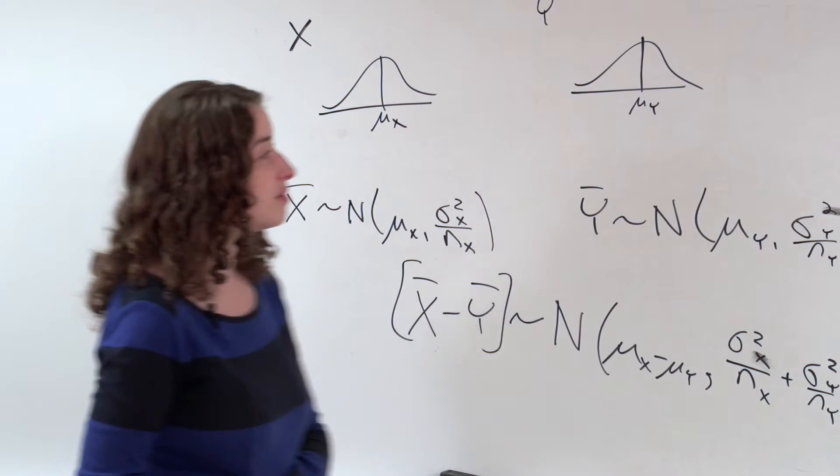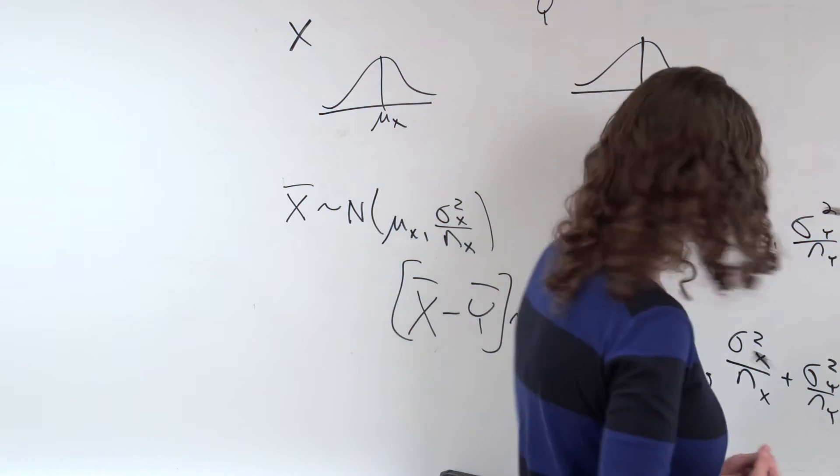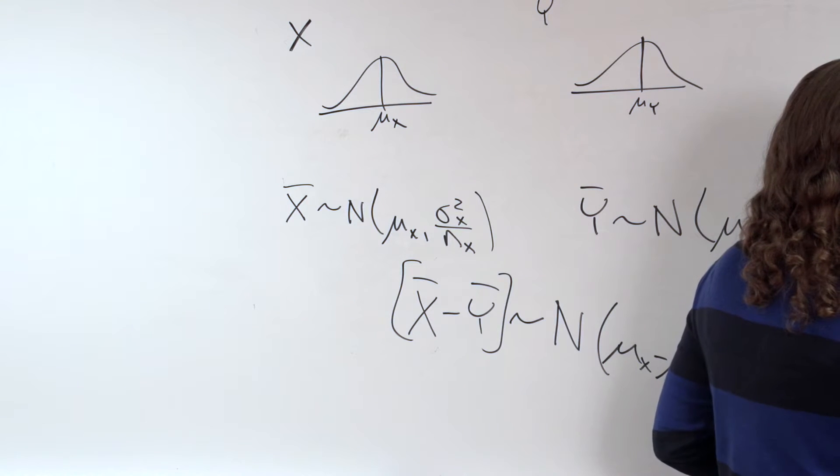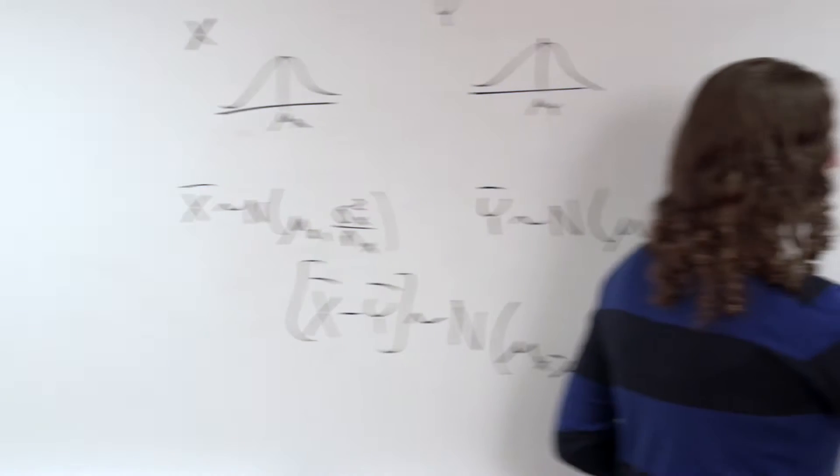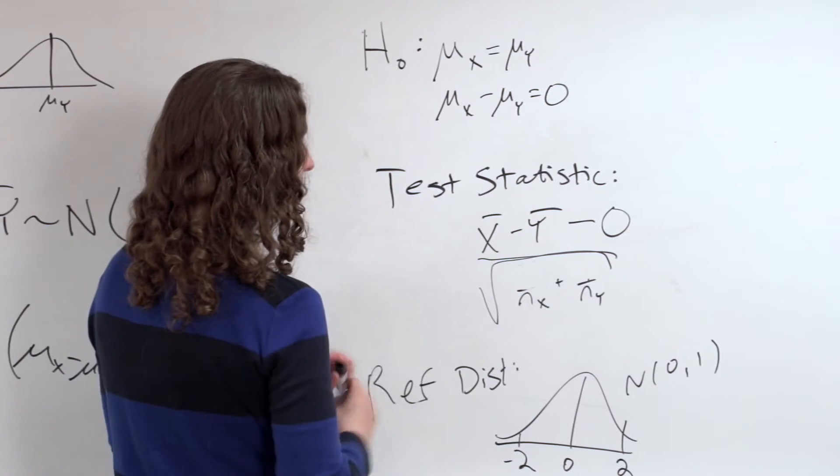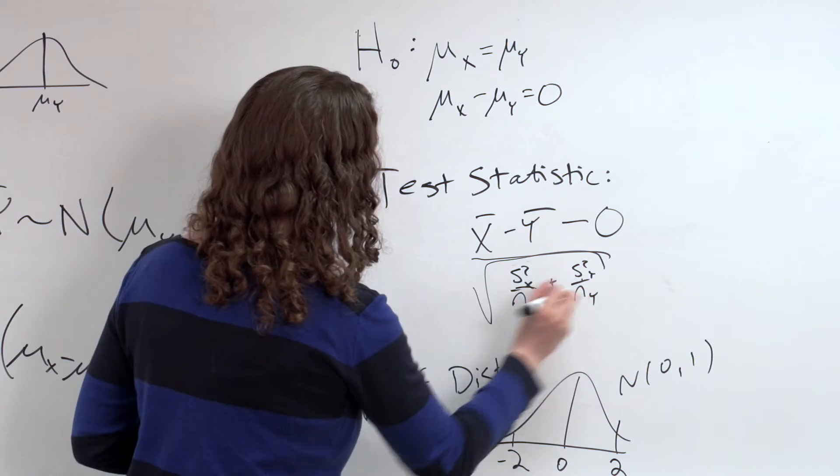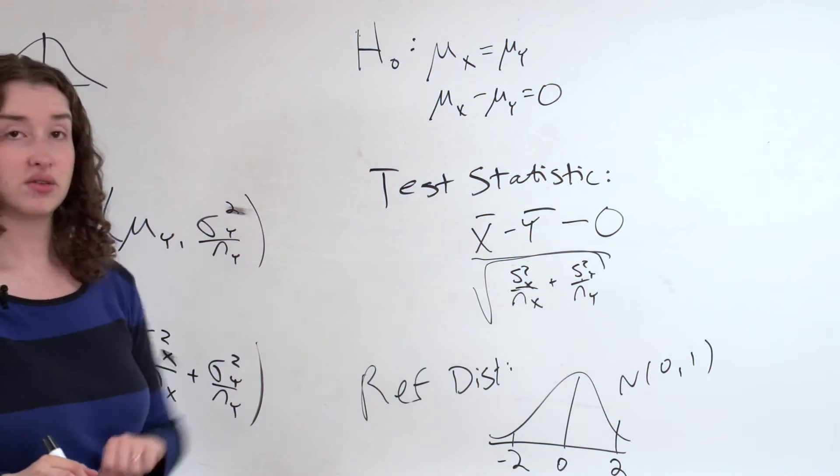So let me slightly change what I have here. Instead of sigma squared x and sigma squared y, I'm going to write s squared x and s squared y, where those are the two sample variances that I can calculate using my data.